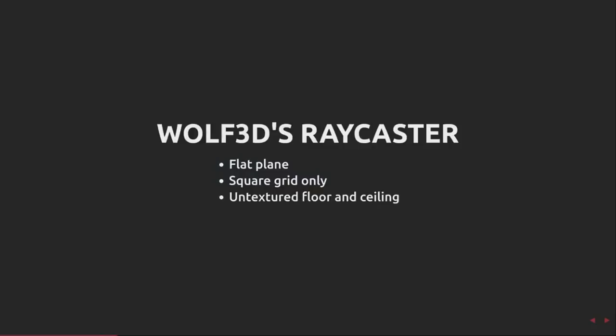Wolfenstein's raycasting renderer was limited to a flat plane like all raycasters, but it had even more restrictions. The map it drew was made up of cells arranged on a square grid, so walls were always at 90 degrees from each other. Additionally, the floor and ceiling were untextured, just plain greys.